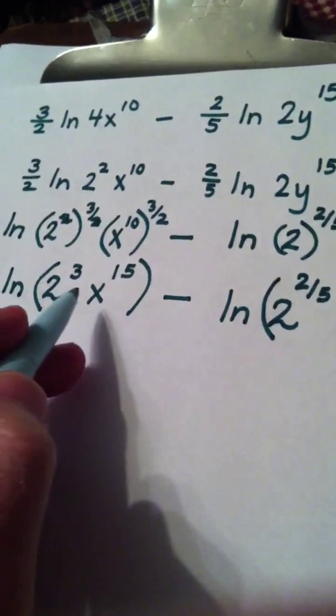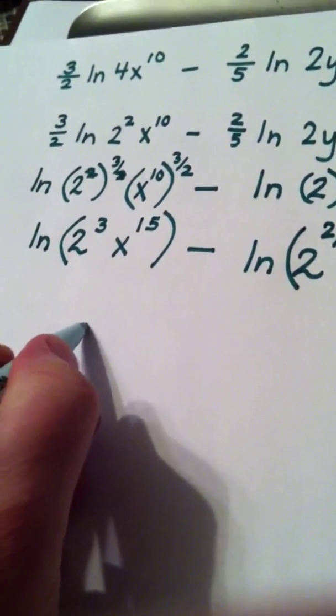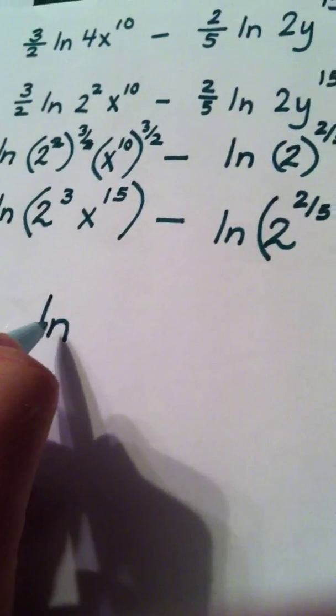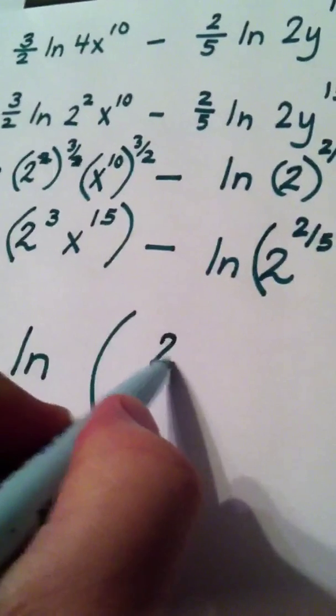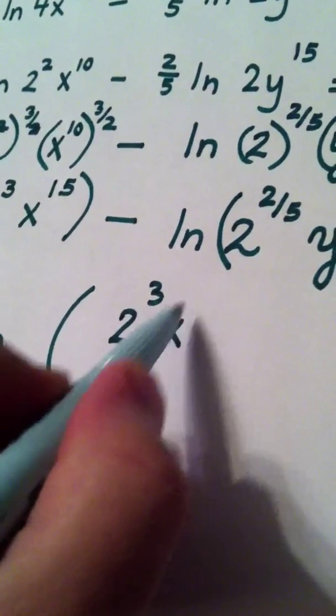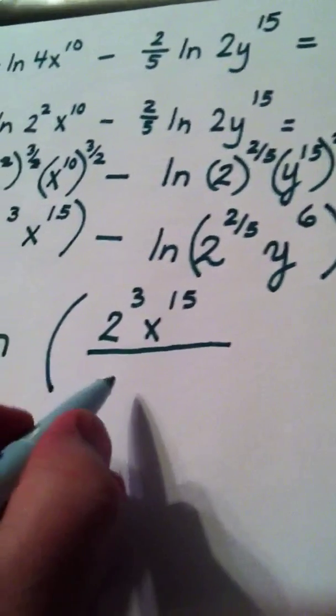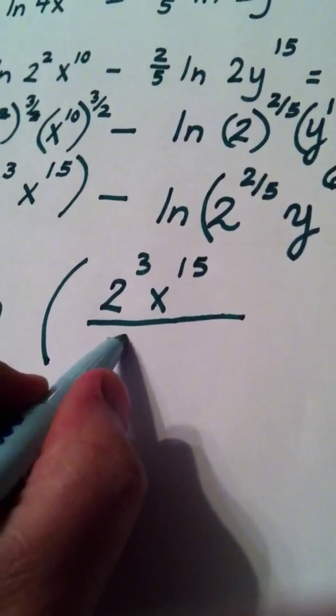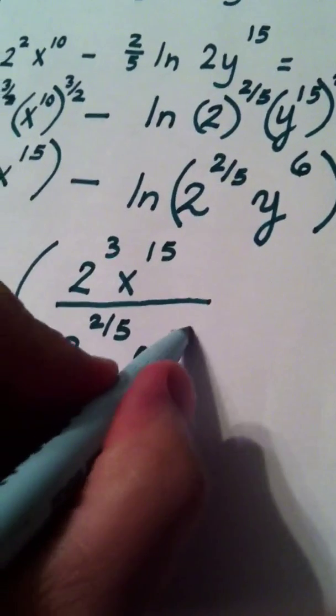If I have the natural log of a number minus the natural log of a number, that becomes the single natural log of the quotient. On top we would have 2 to the 3rd x to the 15th. In the denominator we would have 2 to the 2 fifths y to the 6th.